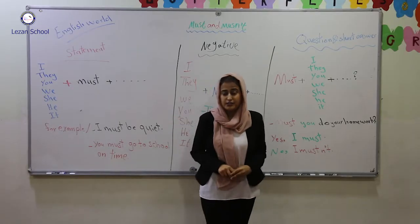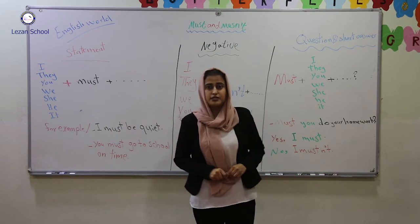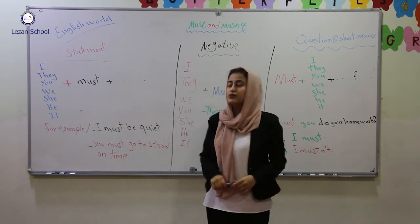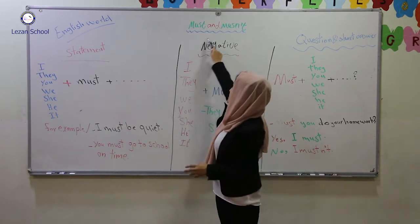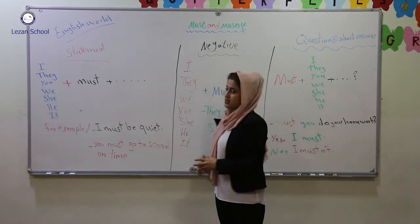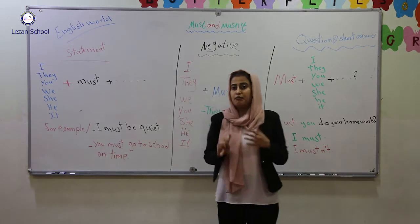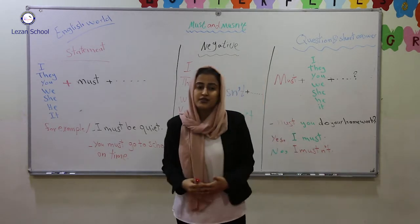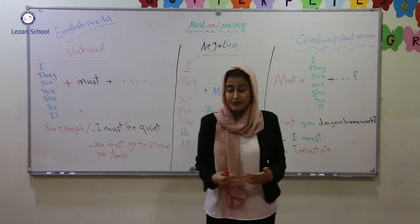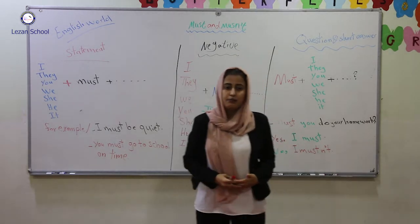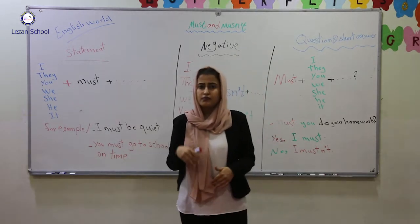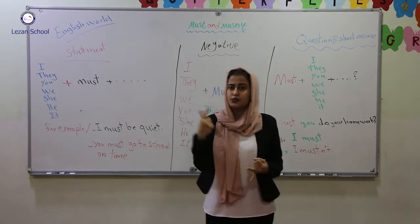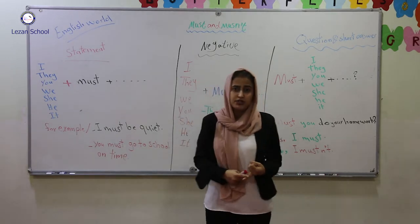Hello, I am Nigar, an English teacher at the London School. Today we are going to talk about must and mustn't. Must and mustn't are used when there is an obligation — for example, when there is a rule or when it is very important.